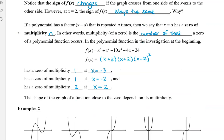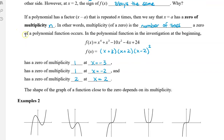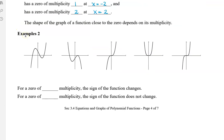The shape of the graph of a function close to the zero depends on its multiplicity. Let's take a look at some examples — you've probably seen some of these graphs before. For the first graph, the zeros are identified, and we can see that the graph crosses the x-axis every single time. So every zero has a zero of multiplicity 1.